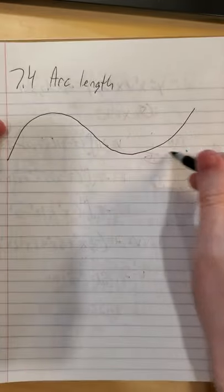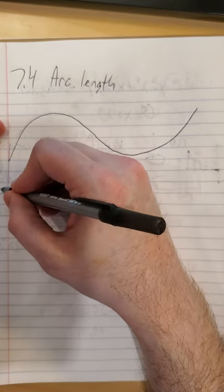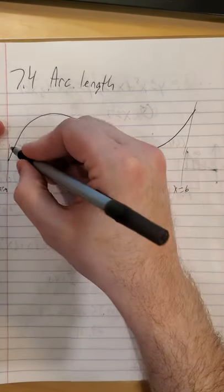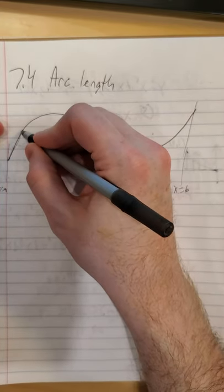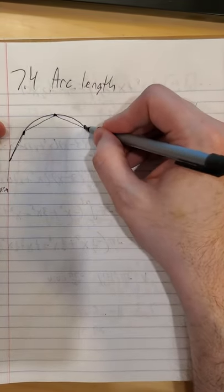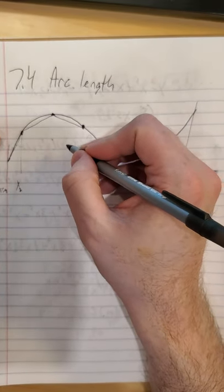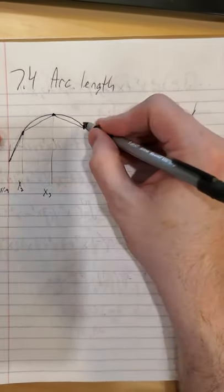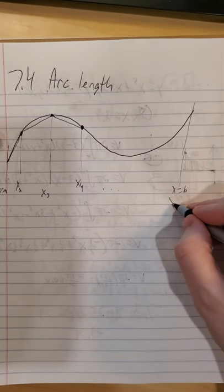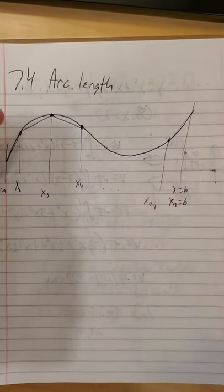So the idea here is if I want the length of this curve, I can start by just cutting it up into little segments. So we'll start at x equals a, we'll end at x equals b. And we'll cut it into little sections and connect line segments. So we'll call this guy x sub 2, we'll call this guy x sub 3, x sub 4, and so on. So x sub n is going to be our b, x sub n minus 1, your second-to-last-line segment.